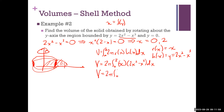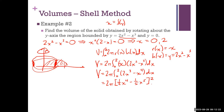Do some simplifying. If I expand this out, I get 2x cubed minus x to the fourth dx. If I find the antiderivative of that, I get one-half x to the fourth minus one-fifth x to the fifth. If I plug in 2, I get half of 16 minus 32 over 5, minus 0.